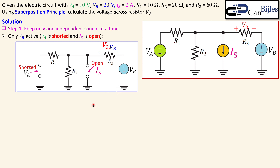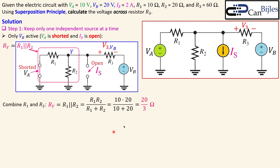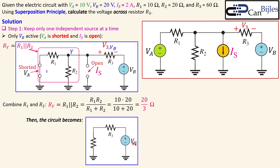There are many methods to work this out — you could also use the current divider rule by converting to a Norton equivalent circuit — but the simpler way is to combine R1 and R2. I label their node Y and call the combination Ry, which is the parallel combination of R1 and R2. With R1 = 10 ohms and R2 = 20 ohms, Ry = 20/3 ohms. I keep this as an exact value because it will give nice results at the end.